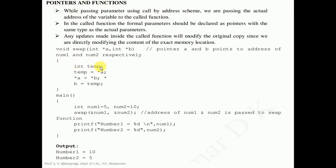We will take a temporary variable temp here which is an integer value. Then we take temp is equal to asterisk a. Asterisk a basically gives us the value of the memory location that is pointed by the pointer a. The value of that memory location will be assigned to temp, then asterisk a is equal to asterisk b, meaning the value stored in the memory location pointed by pointer b will be assigned to the memory location pointed by pointer a. Finally, asterisk b is equal to temp. Like this the values of the two memory locations pointed by the pointer variables will be exchanged and whatever changes we make here it will be affecting the original parameters.